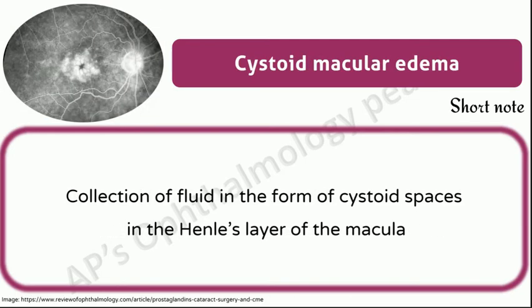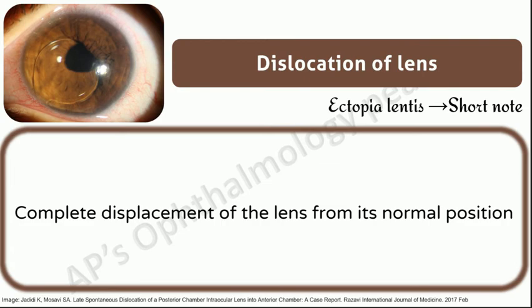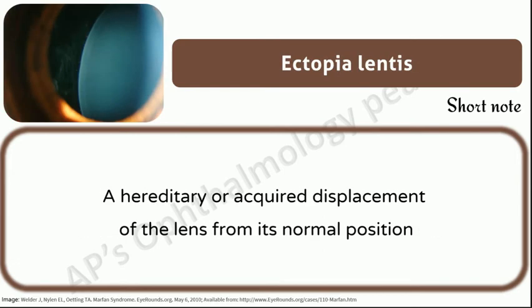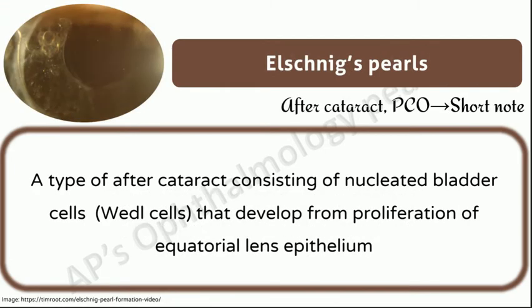Cystoid macular edema: collection of fluid in the form of cystoid spaces in the Henle's layer of the macula. Dislocation of lens: complete displacement of the lens from its normal position. Distant direct ophthalmoscope: examination with a direct ophthalmoscope at 22 centimeters from the eye that helps to detect media opacities. It can also help to differentiate between a mature and an immature cataract. Ectopia lentis: a hereditary or acquired displacement of the lens from its normal position.